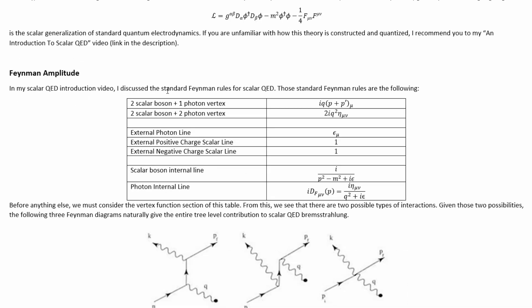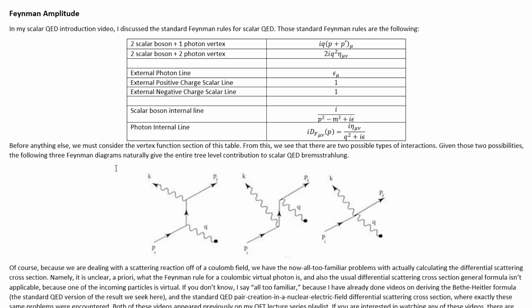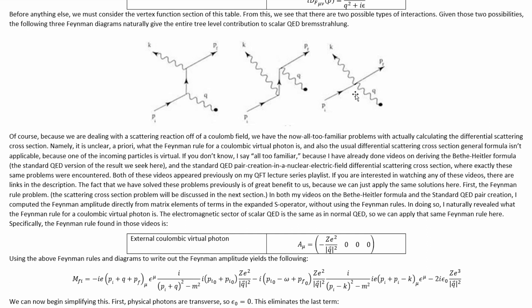In my scalar QED introduction video, I discuss the standard Feynman rules. Those standard Feynman rules are given in this table here. Before anything else, we must consider the vertex function section of this table. From this, we see that there are two possible types of interactions. Given those two possibilities, the following three Feynman diagrams naturally give the entire tree-level contribution to scalar QED bremsstrahlung, where we've got one more than in the normal QED case because of that extra interaction in scalar QED.